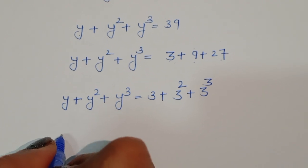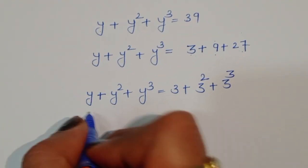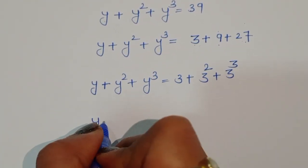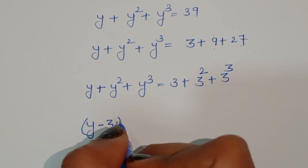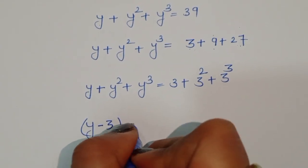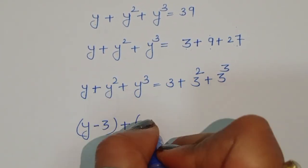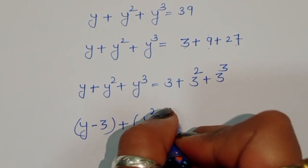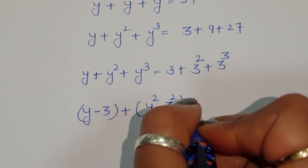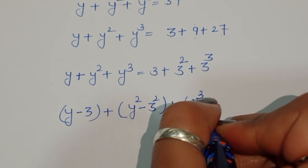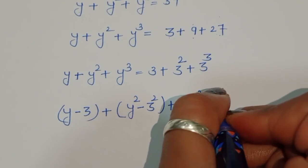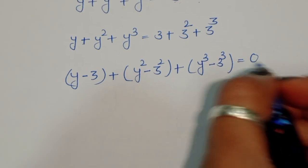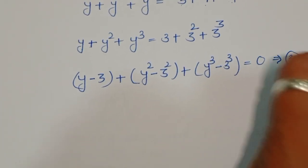Now we can shift these numbers to one side. So we write (y minus 3) plus (y square minus 3 square) plus (y cube minus 3 cube) is equal to 0. This is equation 2.